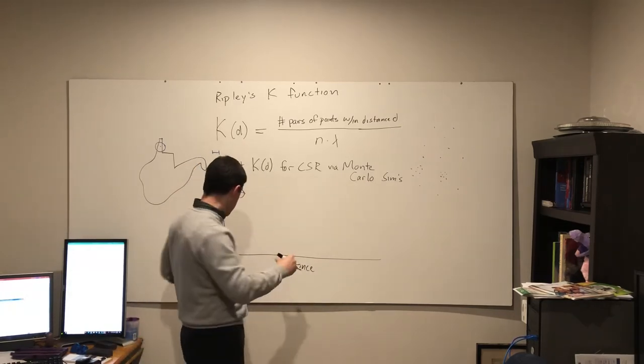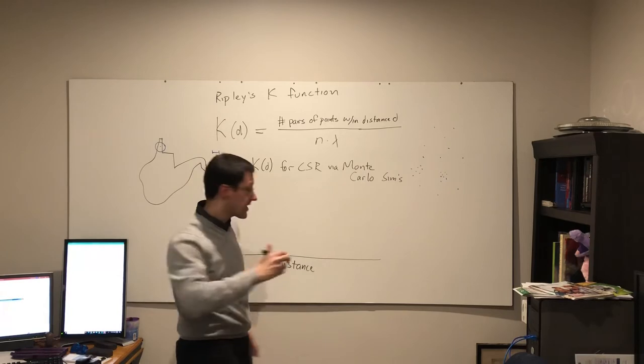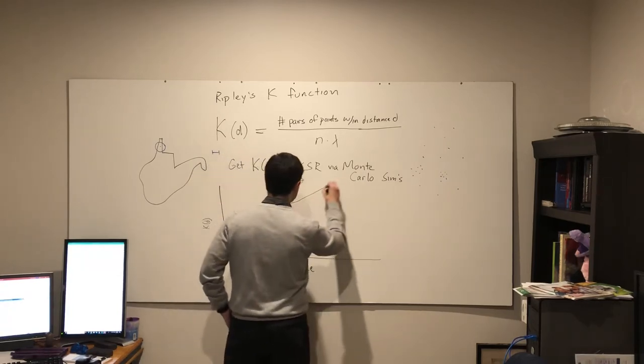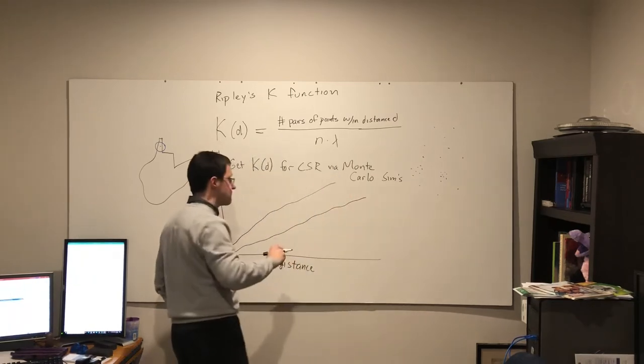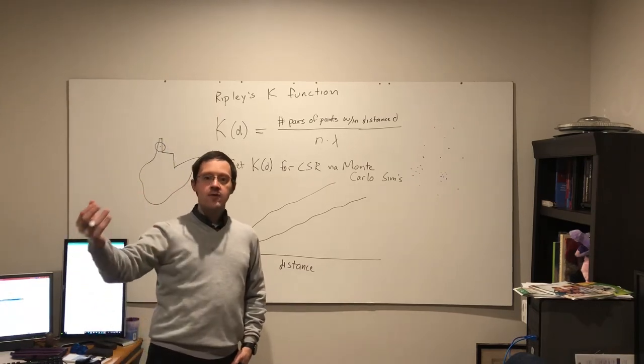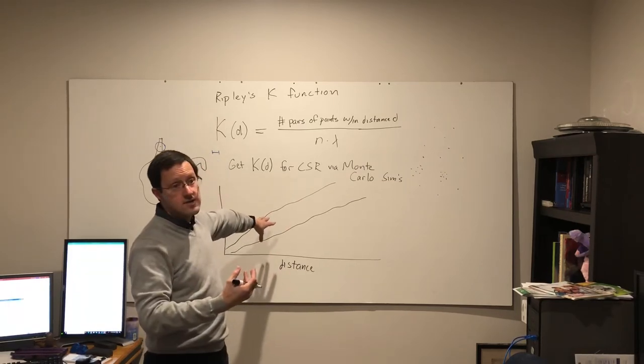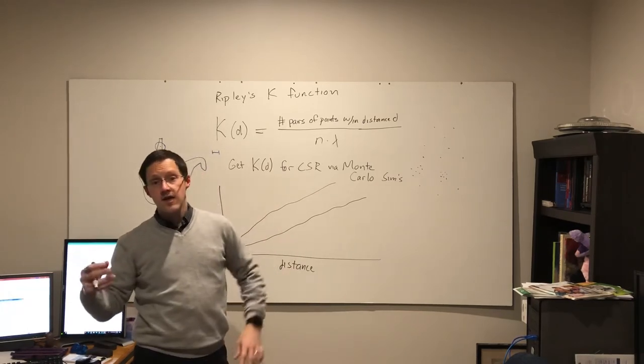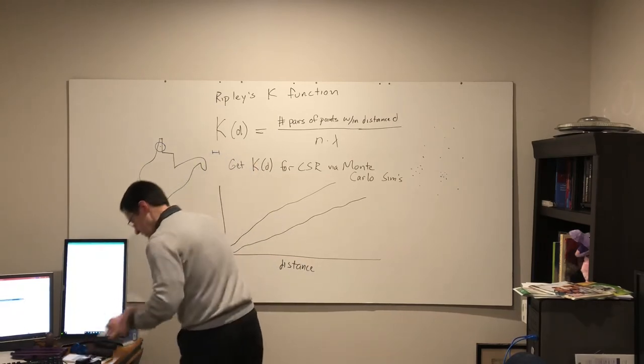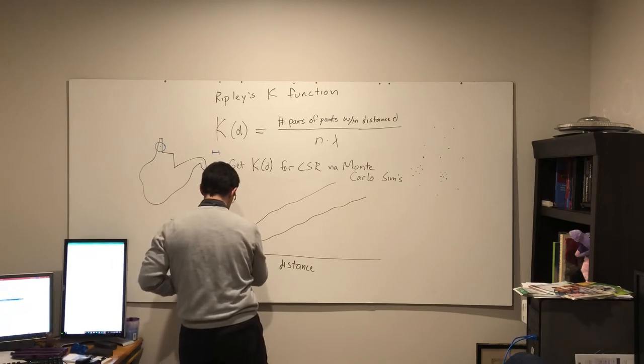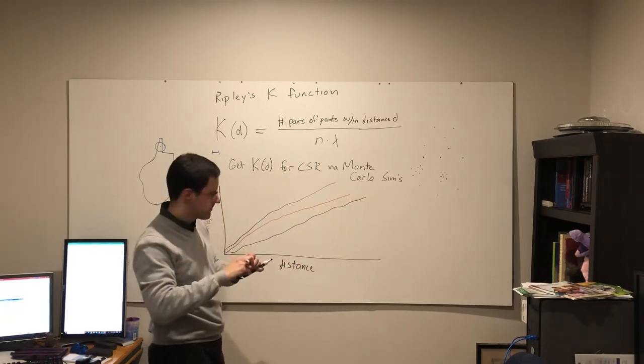Under complete spatial randomness, this is by and large going to increase pretty gradually and constantly. So we end up getting ourselves an envelope of the K function under complete spatial randomness. Essentially, if our actual value of the K function lies inside that line, it is random.